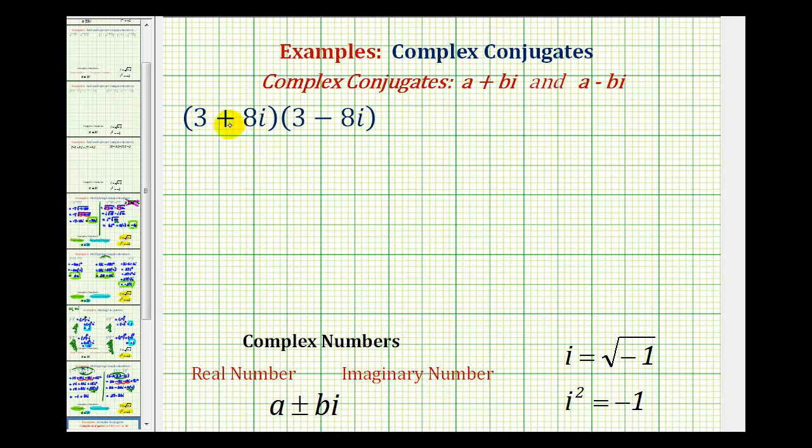So for example, three plus eight i and three minus eight i are complex conjugates. And to discover this special product, let's go ahead and multiply this out.